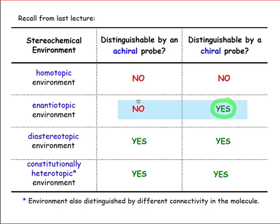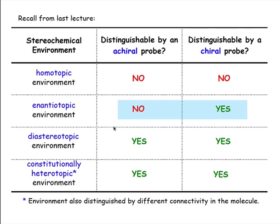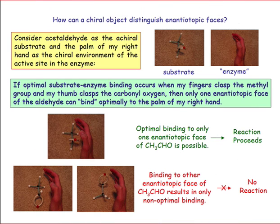If the enzyme were achiral, however, we would not see that same kind of distinguishing. This is why if we just mixed up the nucleophile and electrophile in a flask, we would see a variety of the four possible stereoisomers that could form.